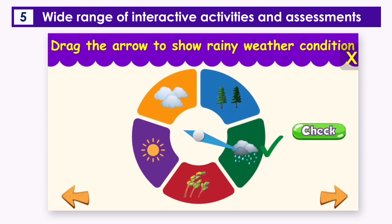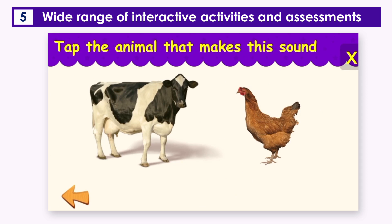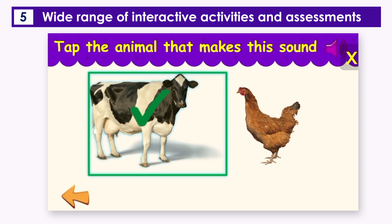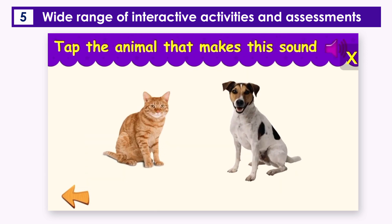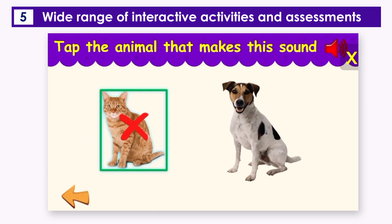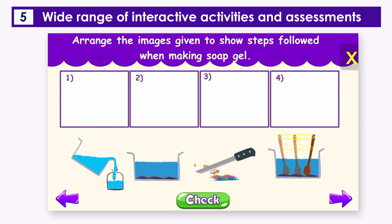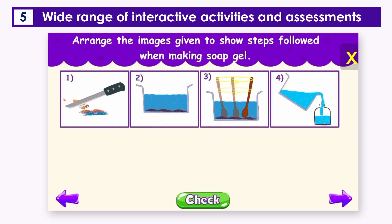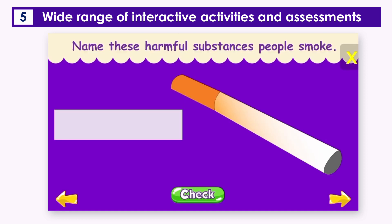Tap or click the animals that make the following sound. Arrange the images given to show the steps followed when making soap gel. Name these harmful substances people smoke.